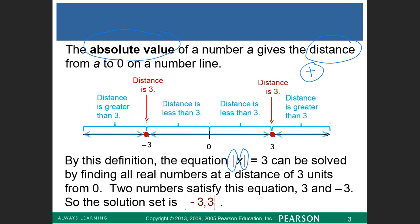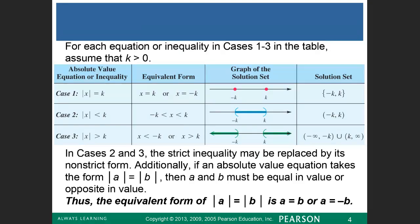Now we're talking about absolute value equations and absolute value inequalities. Looking at the table, the solution set would be a negative and a positive value. So when taking an absolute value equation, you have a possibility to get a positive K and a negative K — two possible solutions.